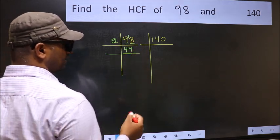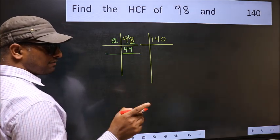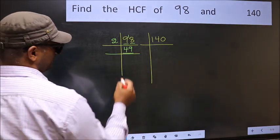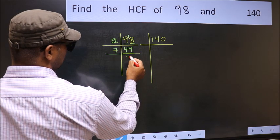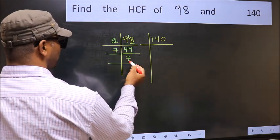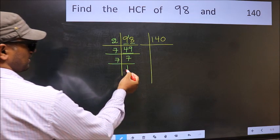Now 49. Always remember 7 times 7, 49. That is 7 times 7 is 49. Now 7 is the prime number, so 7 1s, 7.